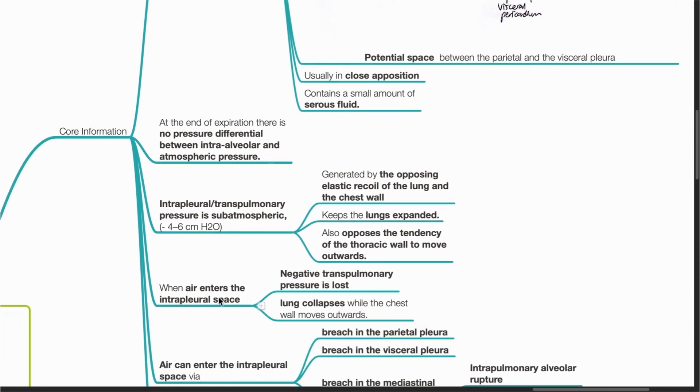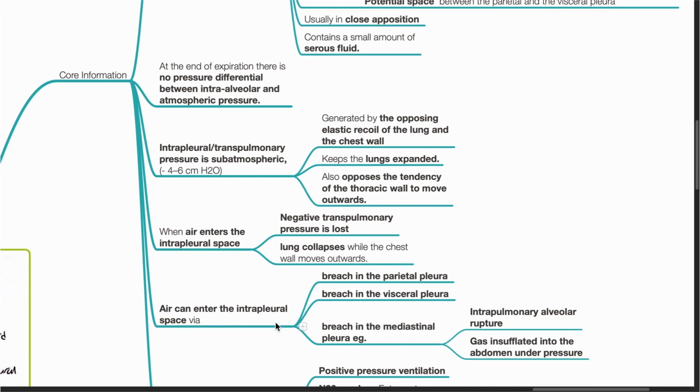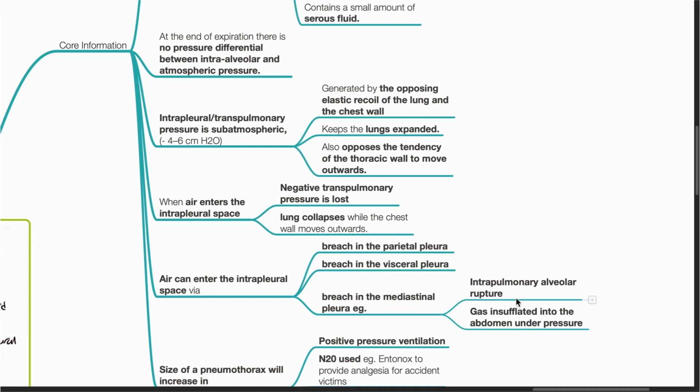When air enters the intrapleural space, negative transpulmonary pressure is lost. The lung collapses while the chest wall moves outwards. Air can enter the intrapleural space via a breach in the parietal pleura, visceral pleura, or mediastinal pleura. For example, via intrapulmonary alveolar rupture or gas insufflated into the abdomen under pressure.